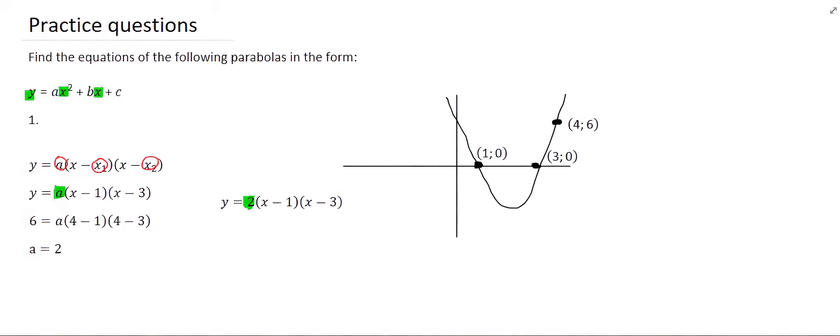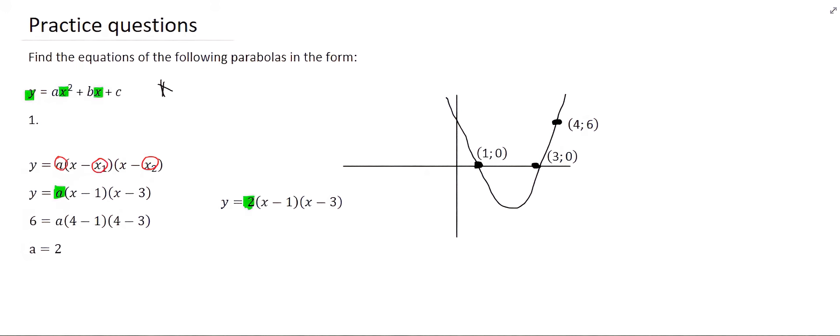However we are not finished because the question asks for the equation in the form ax² + bx + c. We leave the value of 'a' on the outside and multiply the two brackets together, then multiply 'a' into the result to get the final answer, at which point the question is complete.